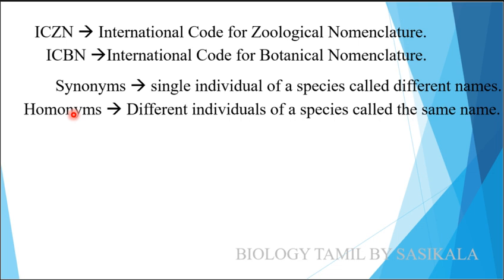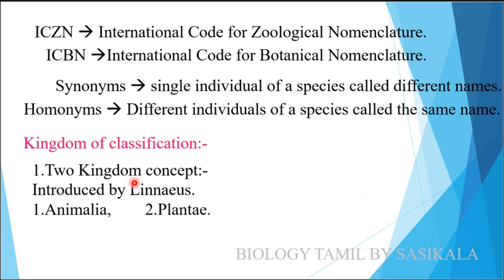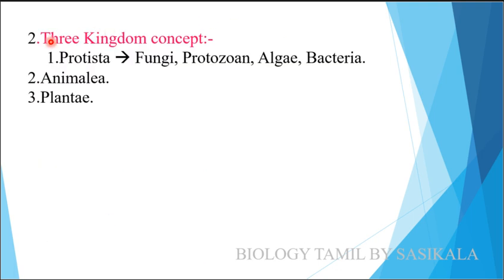How do we classify animals in kingdoms? The Two Kingdom Concept classifies all living things into two categories: Animals and Plants. The Three Kingdom Concept was introduced by Haeckel, who classified living organisms into three kingdoms.